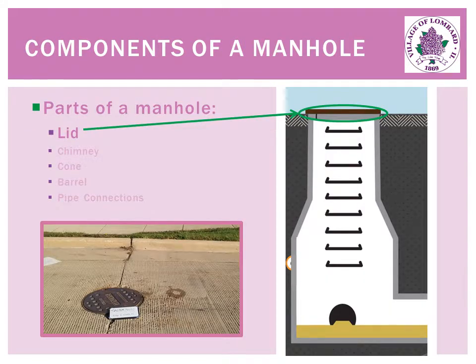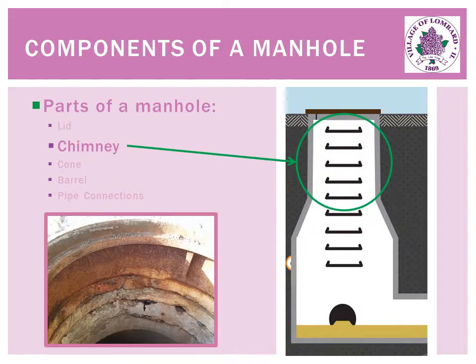A manhole is composed of some key components. On top of the structure is the lid, which can be seen from the street. Below street level, there are more parts you may be less familiar with. Under the lid is the chimney, which brings the lid flush with the surface.